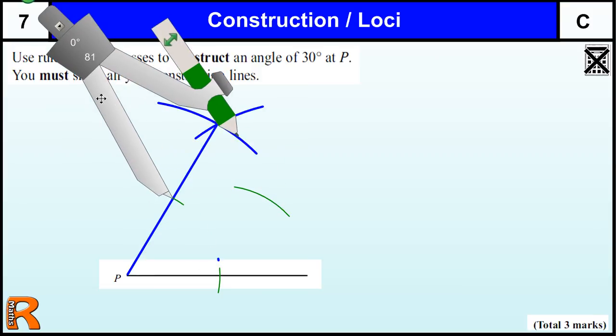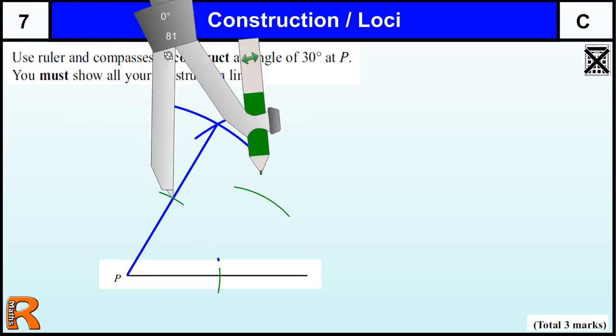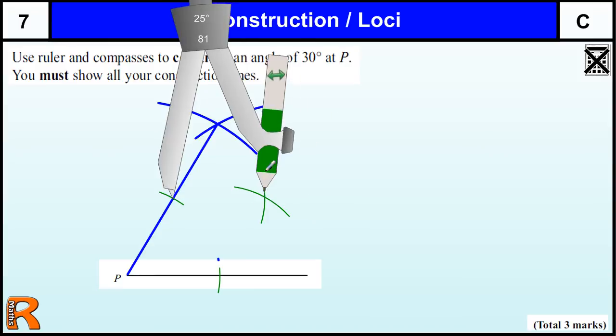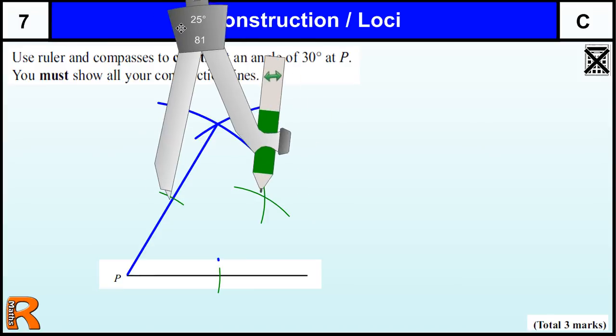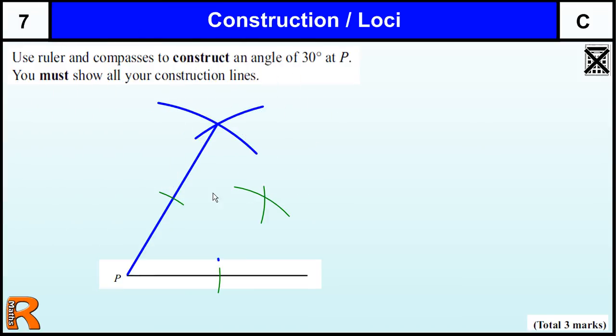So this one and this one have the same distance on the compass. So we've constructed a point that is equally distant from this line and this line. And so any line we draw through that point from this angle, it's going to be a bisector. So this is going to be 30 degrees, because this was 60, and that's half of it.